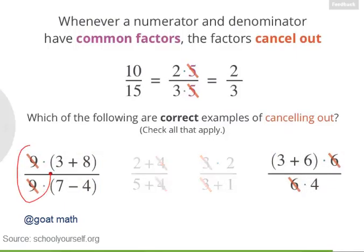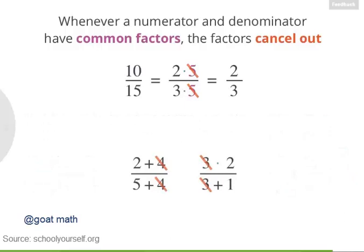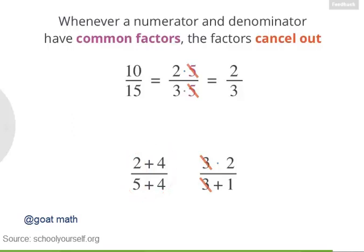Precisely. Over here, the 9s are a common factor. And over here, the 6s are a common factor. But these cancellations are actually wrong. Over here, you're adding 4, not multiplying by 4. And you can check that with a calculator — 2 fifths is not the same as this expression, which turns out to be 6 ninths, or 2 thirds. And over here, 3 is a factor in the numerator, but not in the denominator. So you can't cancel out in this expression either.